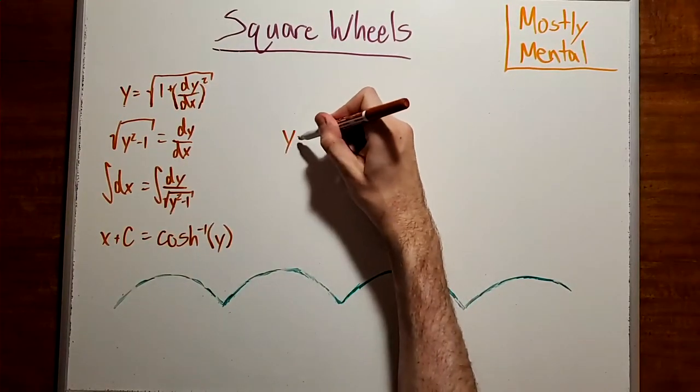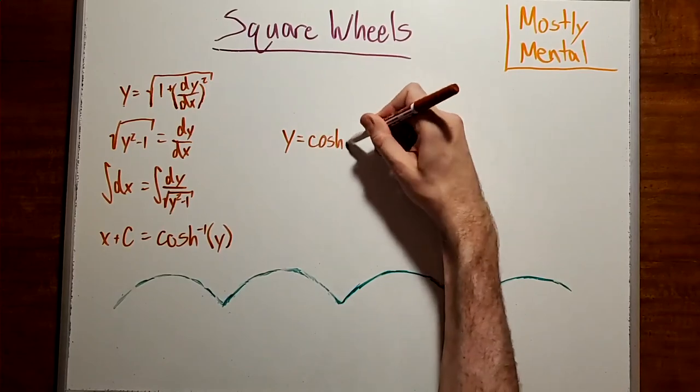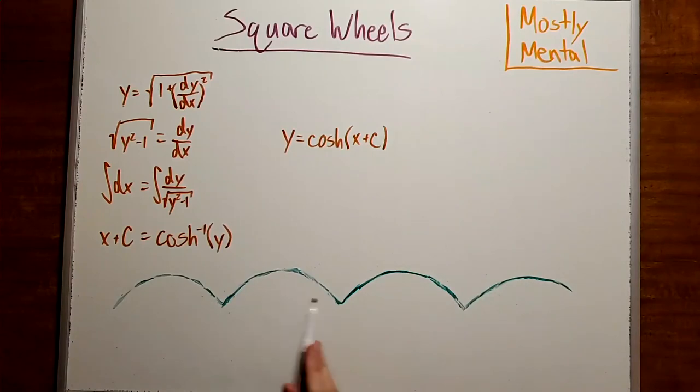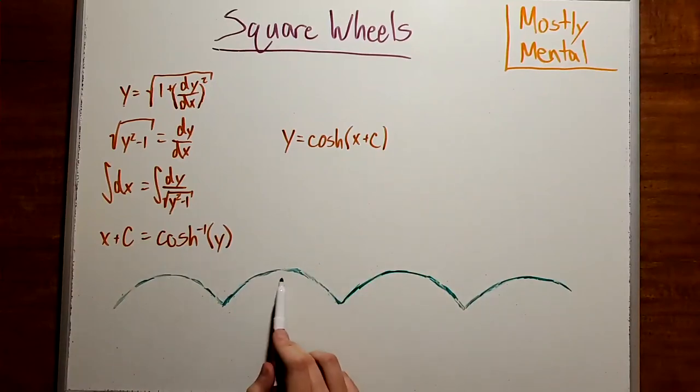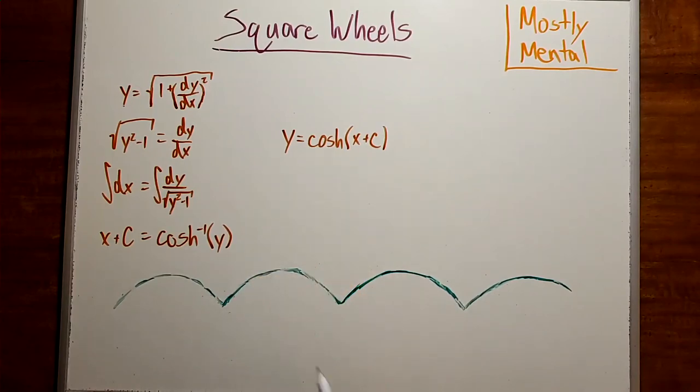Then solving for y, we get y is the hyperbolic cosine of x plus c, which means each of these bumps is a hyperbolic cosine curve, where the constant c gives us the position of the peak. And the curves are all facing downward because y is the distance below the center of the square.